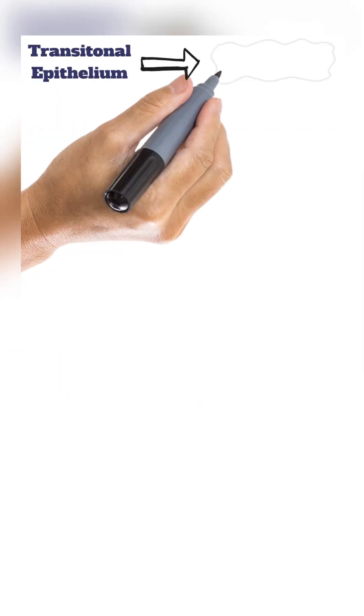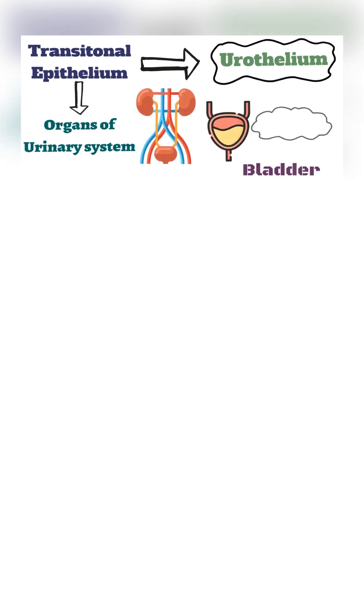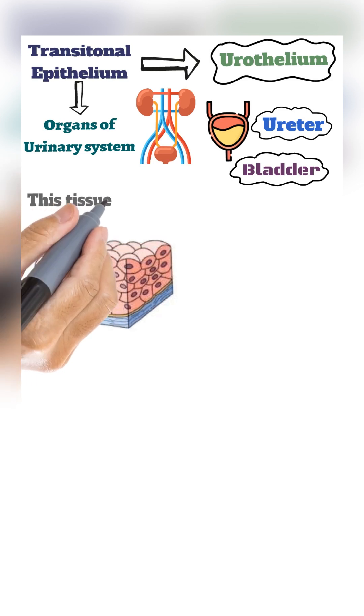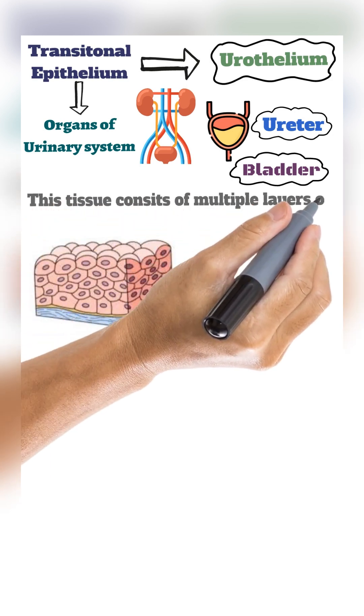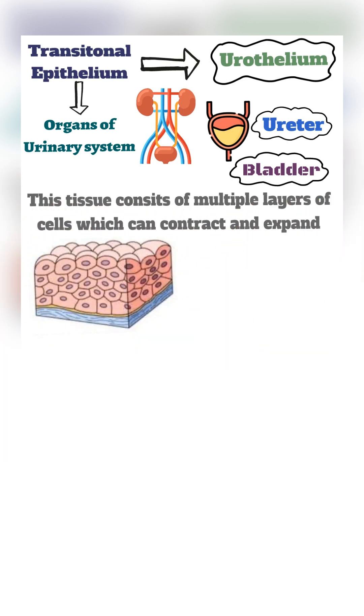It is also called urothelium because it is found in the organs of the urinary system, such as the bladder and ureter. This tissue consists of multiple layers of cells which can contract and expand.